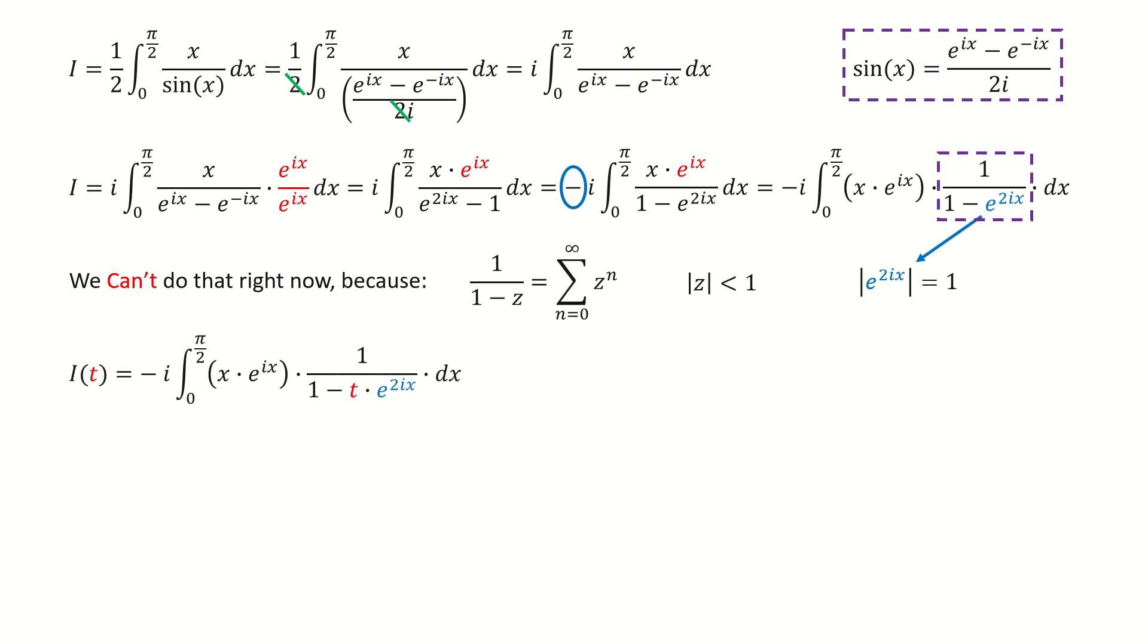Here, we introduce a parameter t, and we require t is between 0 and 1. For the original integral, it equals the limit when t approaches 1 from the negative side. After we introduce this parameter t, now the modulus of this product is less than 1. Now we are safe to do the power series expansion for this term.